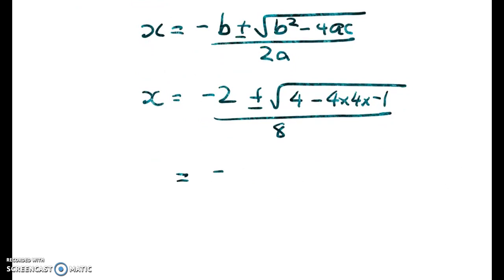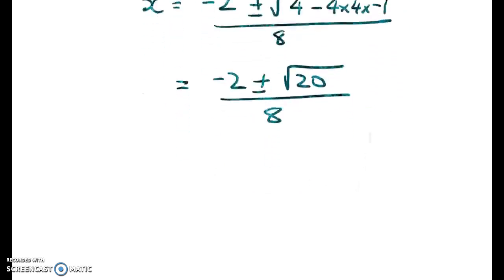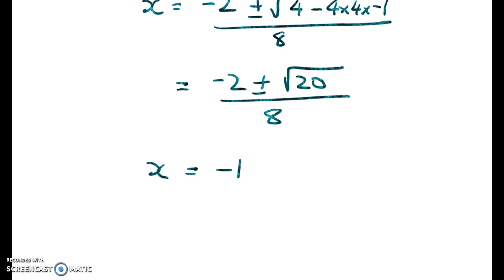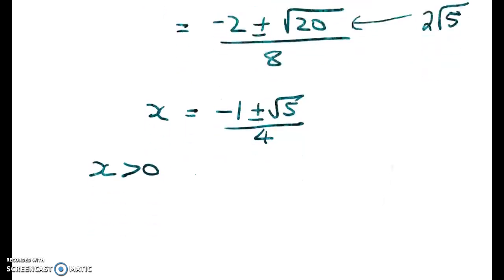So cleaning this up: negative 2 plus or minus root 20 over 8. That gives me x is equal to negative 1 plus or minus root 5 divided by 4, because root 20 is equal to 2 root 5. Now, we know that x is greater than 0, so we can reject the negative root. And so x must equal negative 1 plus root 5 over 4.